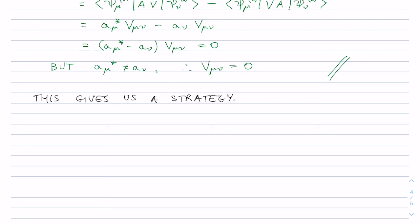And strategy's one: identify an operator A such that the commutation relationships that we need are zero.